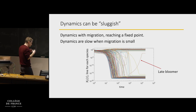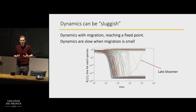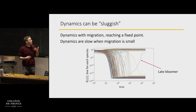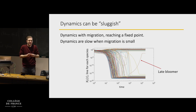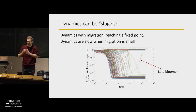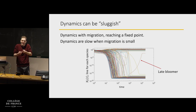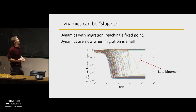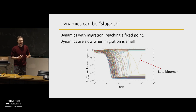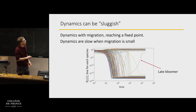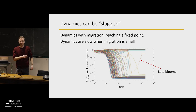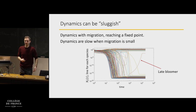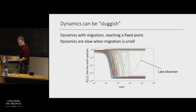People who play around with these equations have noticed that these dynamics can be sluggish — a rough name for this tendency of things to take way longer than you would have expected. When migration is very low — 10 to minus 18 in this simulation — that slows things down significantly.